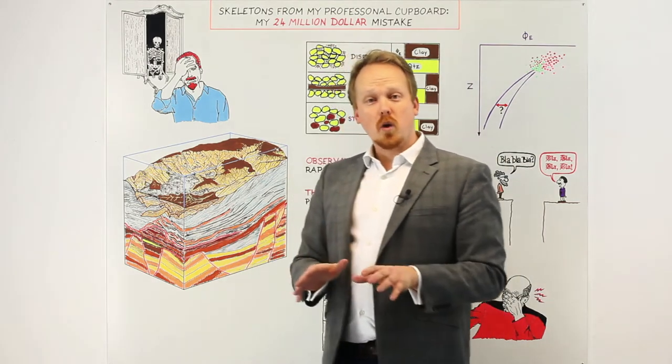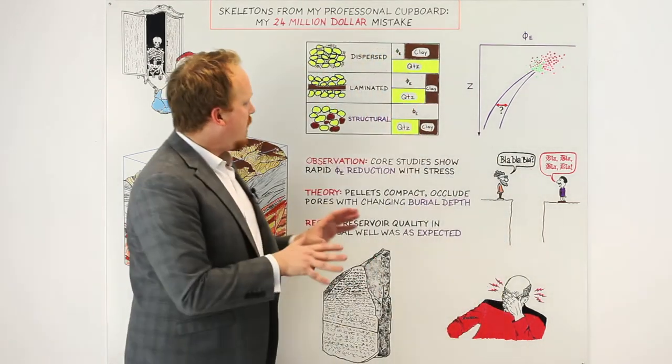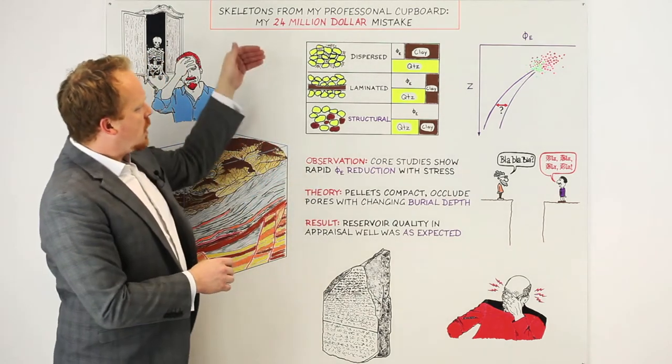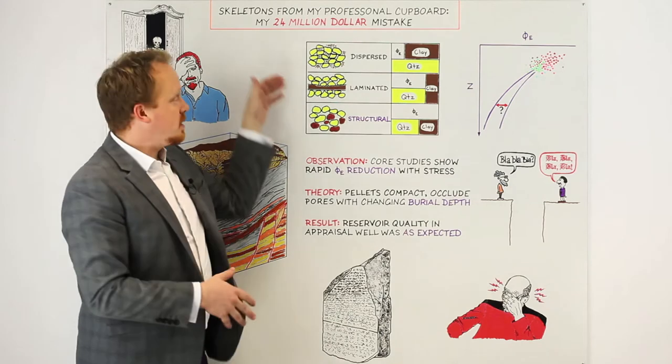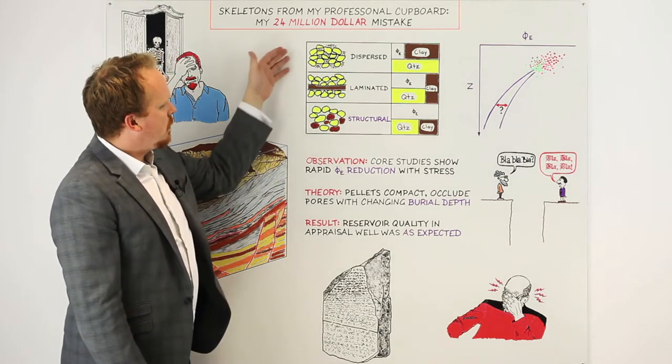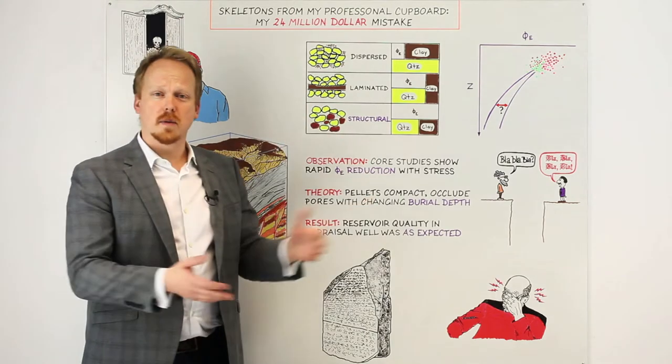The reservoir itself as well was quite unusual. What we had in this reservoir was a structural clay. If you haven't seen this before, it's common for us to see dispersed clays, typically authigenic cements that are occurring at the grain boundaries. We have laminated cements that are commonly depositional.